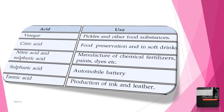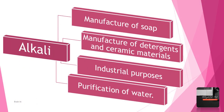Uses of acids: Vinegar, pickles, and other food substances use acetic acid. Citric acid is used in food preservation and soft drinks. Nitric acid and sulfuric acid are used in the manufacture of paints, chemical fertilizers, and dyes. Sulfuric acid is used in automobile batteries. Tannic acid is used in the production of ink and leather. Alkalis are used in the manufacture of soap, detergents, and ceramic materials, for industrial purposes, and for the purification of water.